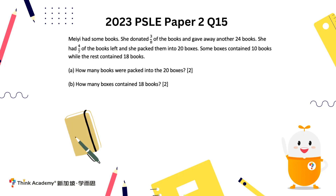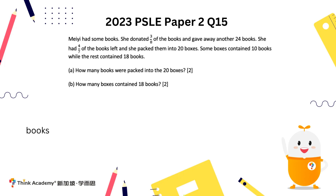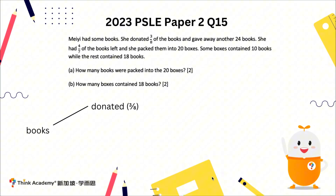Mei has some books. She donated 3 over 8 of the books and gave away another 24. Then she had 4 over 7 of the books left. We can apply our branching method here. The books are split into three sections: the first part donated, the second part given away, and the last part the leftover amount. The donated portion takes up 3 over 8 of the total.